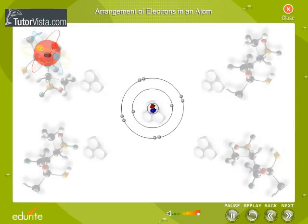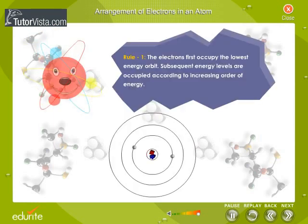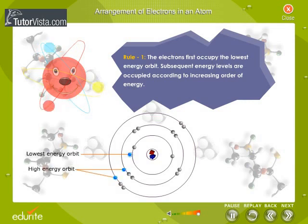The rules for filling up electrons are described here. Rule 1: The electrons first occupy the lowest energy orbit. Subsequent energy levels are occupied according to increasing order of energy.